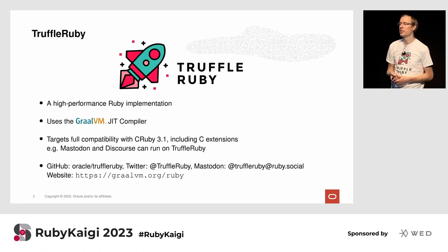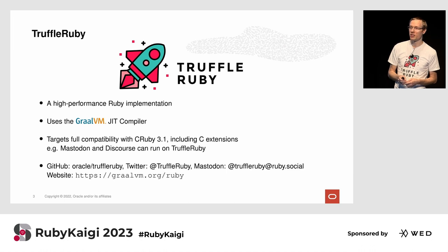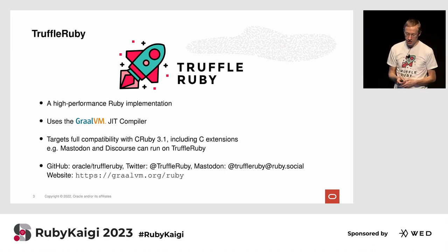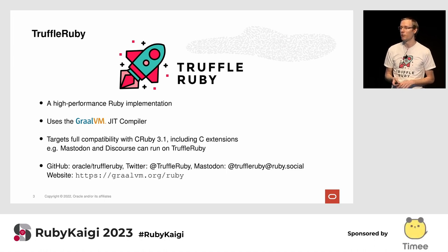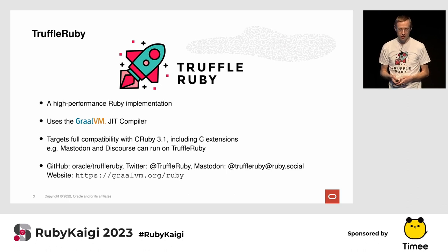TruffleRuby, if you don't know yet, is a high-performance Ruby implementation using the GraalVM JIT compiler. It targets full compatibility with CRuby 3.1, including C extensions, so it aims to be a drop-in replacement for CRuby. It can actually run Mastodon and Discord with very minimal changes. It's on GitHub, on Twitter, on Mastodon, and there's also a website.